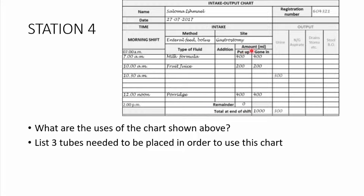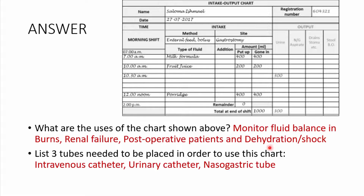Station 4: Study this chart. What are the uses of the chart shown? List three tubes needed to be placed to use this chart. This is a fluid input-output chart, used to monitor fluid balance in patients with burns, renal failure, post-operative patients, and patients with dehydration and shock — most of these indications are surgical indications.